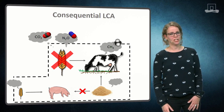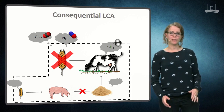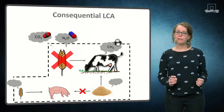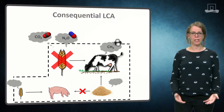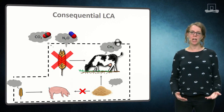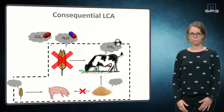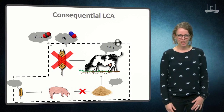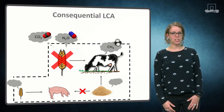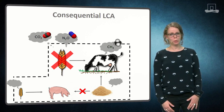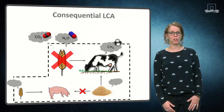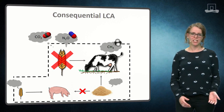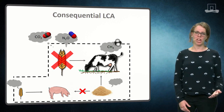In this case, for example, you need to account for the fact that you feed fewer cereals to your cows, but that the pig farmer has to feed more cereals now he can't use wheat middlings anymore. In this case, consequential LCA can help you. Consequential LCA describes the environmental consequences of a possible change in a system by evaluating all the processes that are affected by that change.